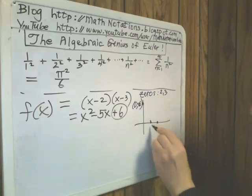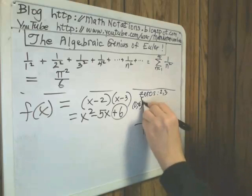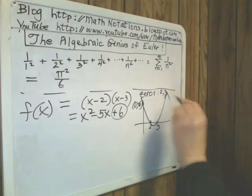0, 6. And then you would have x-intercepts at 2 and 3.